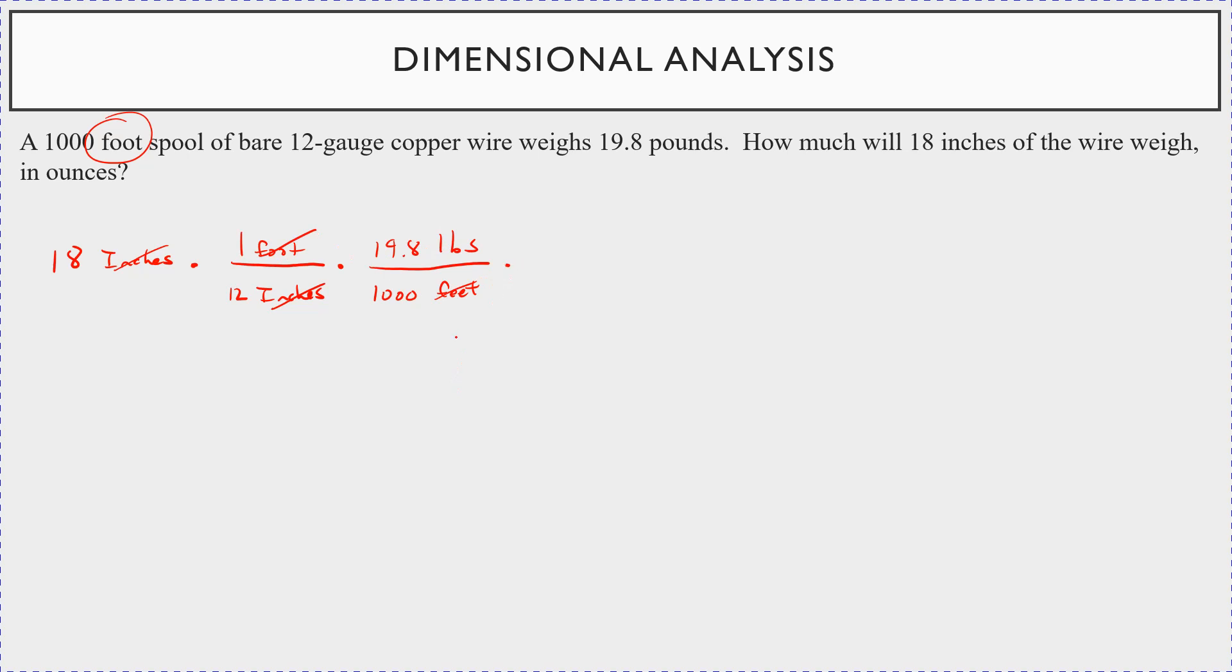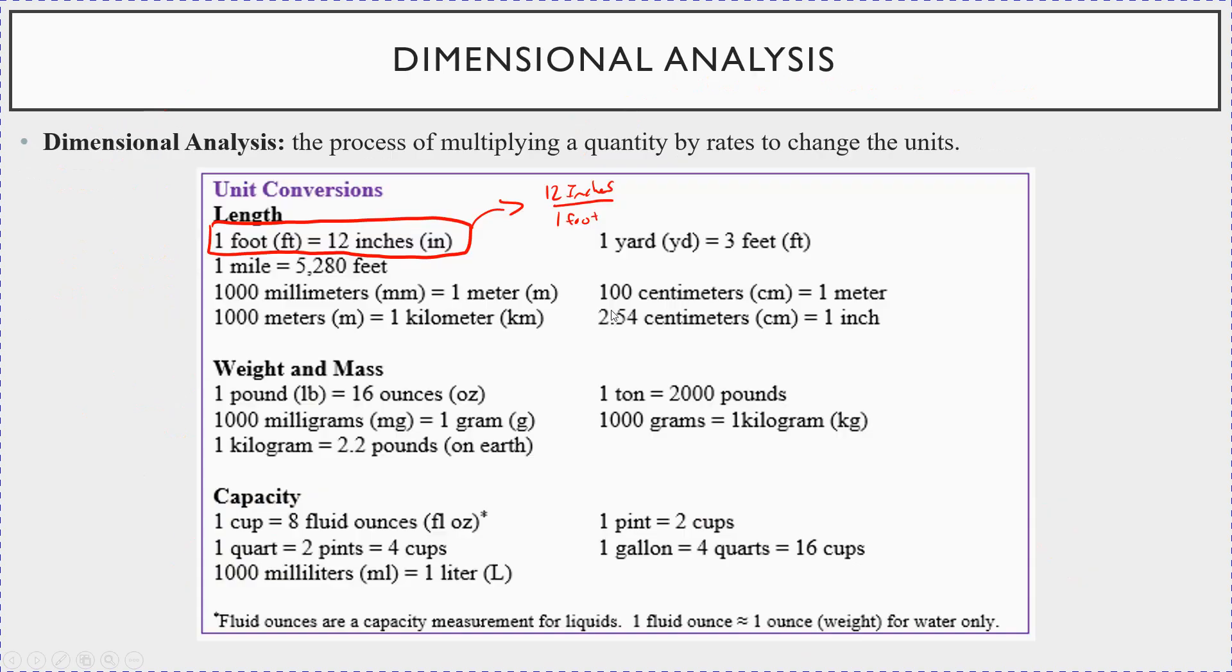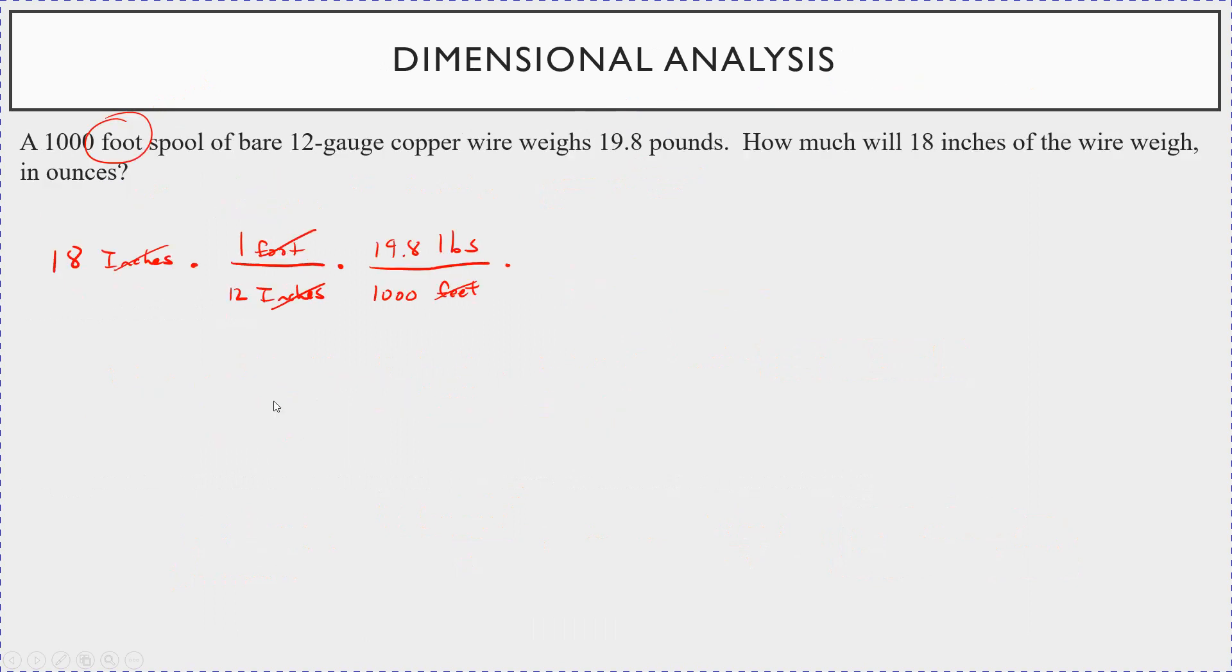And then how many pounds to get rid of pounds and put it in terms of ounces. Let's look back. 16 ounces in one pound right here. So one pound, 16 ounces. So the pounds are going to cancel. And that's great. You're left in terms of ounces. So it's 18 times 1. I'm just not going to put the ones because anything times one is just itself. Times 19.8. Times 16. All divided by 12 times a thousand. And this is ounces. All right. Let's see what we get.